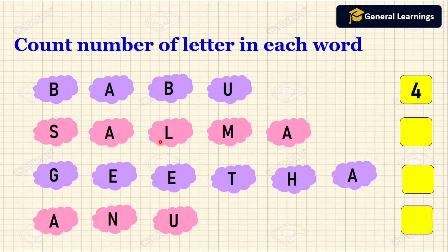S, A, L, M, A. So how many letters? 1, 2, 3, 4, 5. So there are 5 letters.